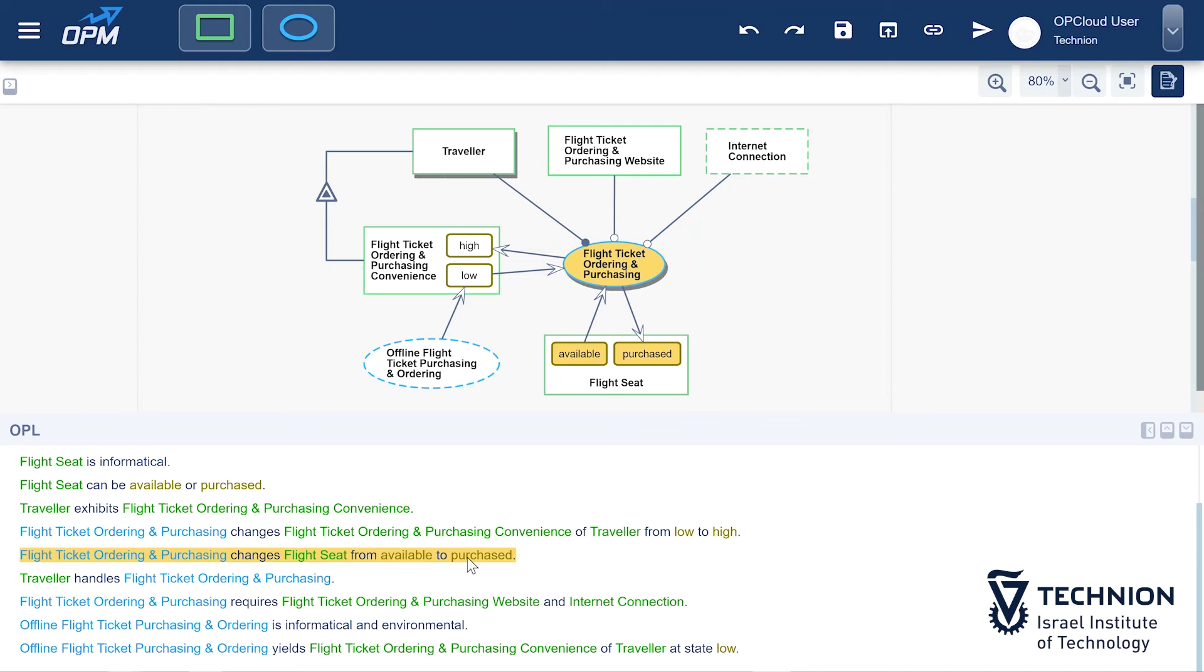The function of the system is to change the status of a seat in a flight from available to purchased. The enablers include the agent of the main process, the traveler, and the instrument, the website. The environment includes internet connection, which is also an instrument of the main process. Finally, the problem this system solves is the difficulty of finding flights and ordering tickets.